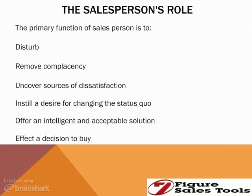In needs-based selling, our primary function is not to be the prospect's friend — prospects are not our friends. Your role as a salesperson is to disturb the prospect. If you don't remove complacency, uncover the source of their dissatisfaction, help them relive the pain they're going through, and instill a desire to change the status quo, then what reason do they have to make a buying decision today? People buy on emotion and move to action by logic, so you have to sell to the emotion, sell to the pain, and then offer an intelligent and acceptable solution.